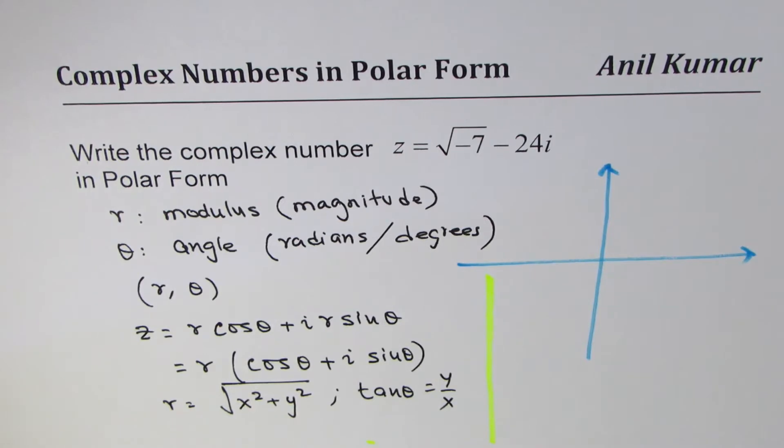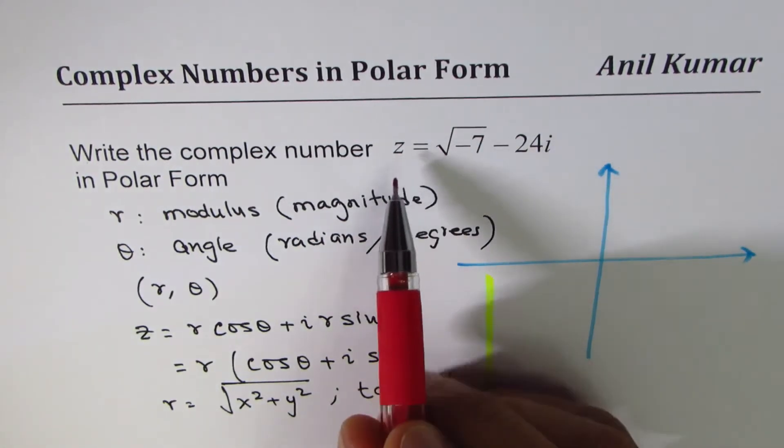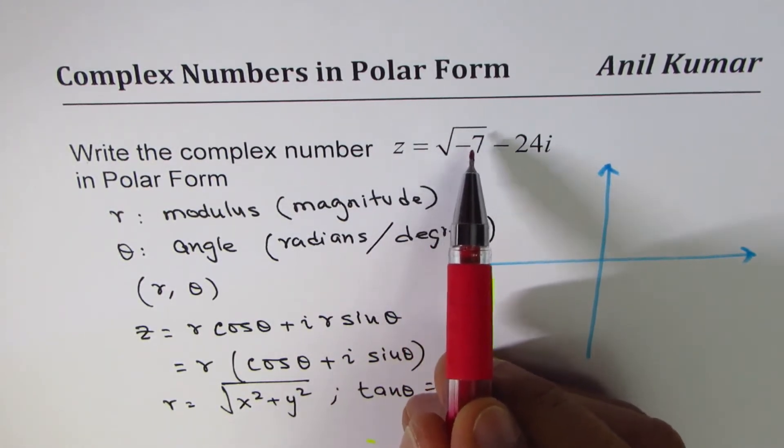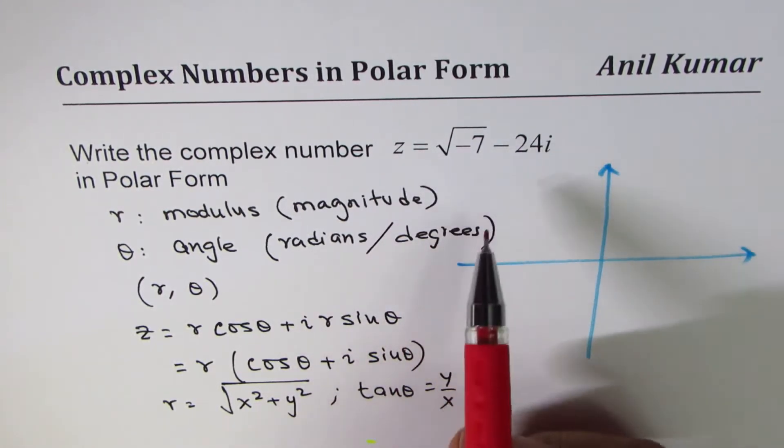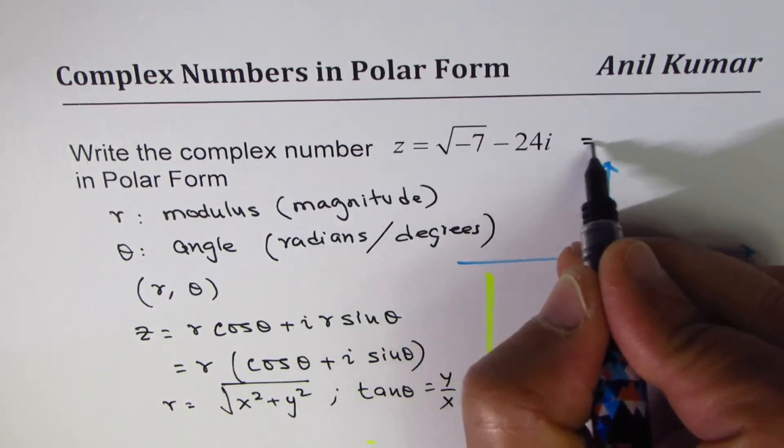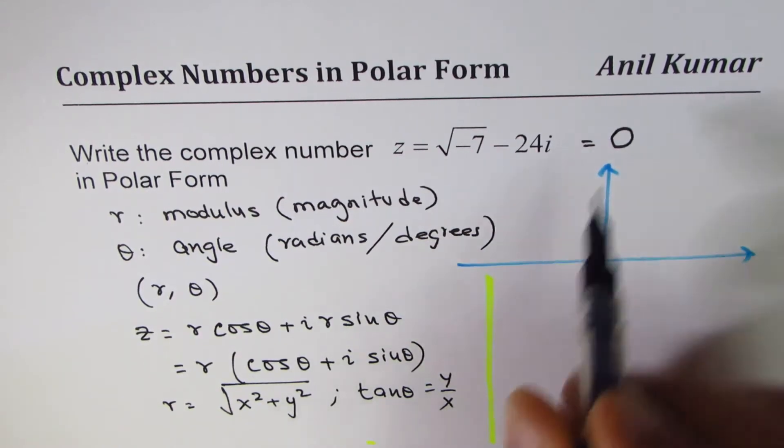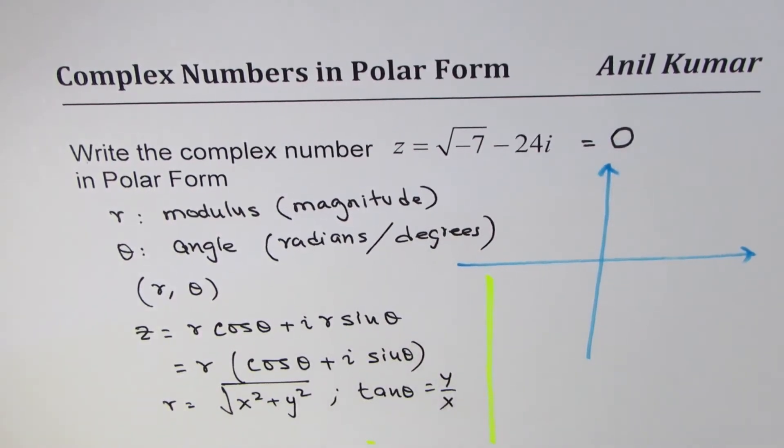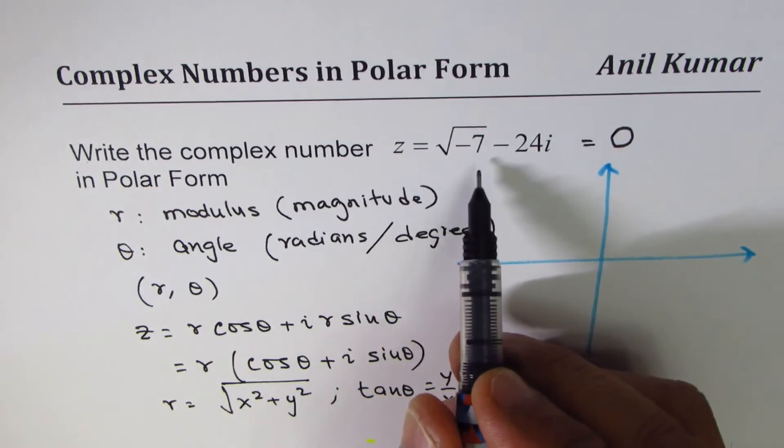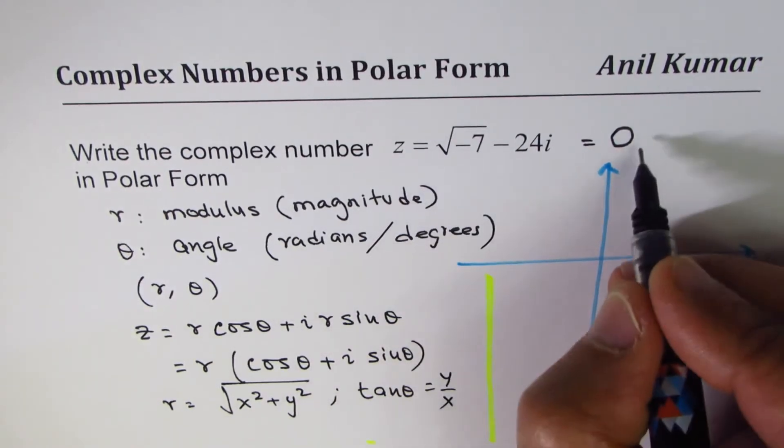Now the tricky part of this question is: do we have a real part here? Let's look at z equals square root of minus 7 minus 24i. Strictly speaking, the real part is zero. We should think about it like this: zero is my real part.